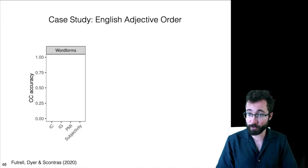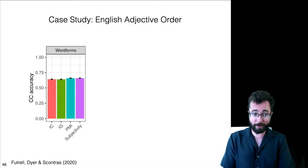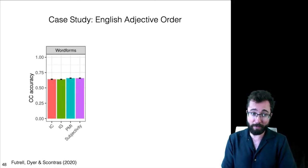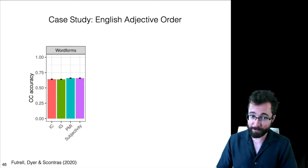So, now running individual regressions with each of these predictors for adjective order, we get these results in the common crawl corpus. We find that PMI and subjectivity have the best accuracy, this is high 60s accuracy, in predicting the order of the triplets.